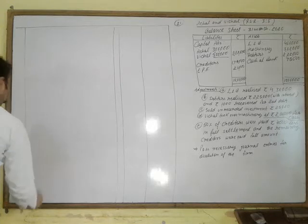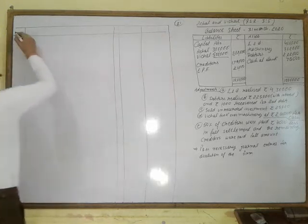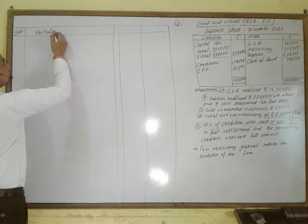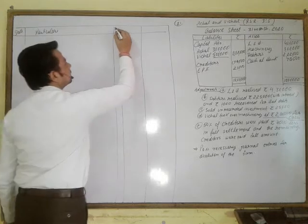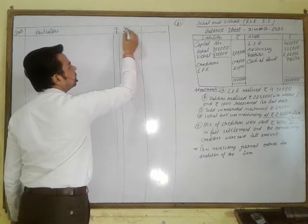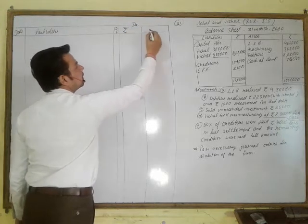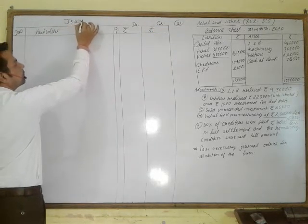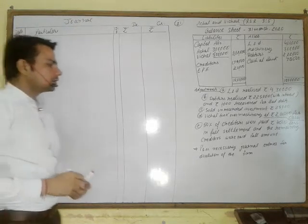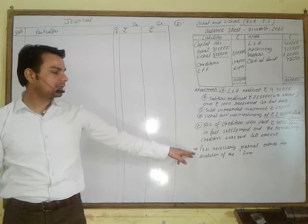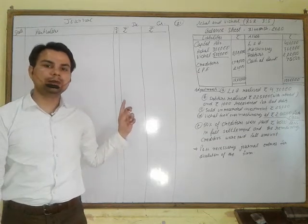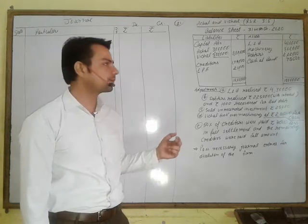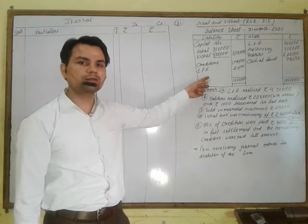Now you have drawn the format of the journal with columns: date, particulars, journal folio, amount debit, and amount credit. That was the first step — read the last line and draw the format. The second step in this type of question is to examine the balance sheet carefully.